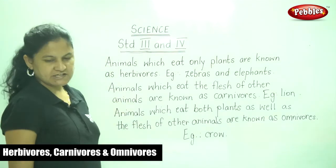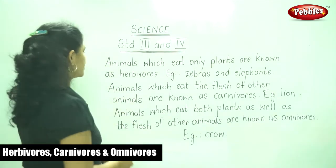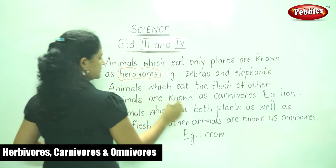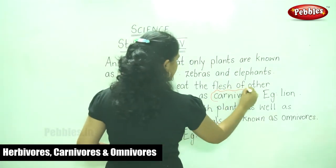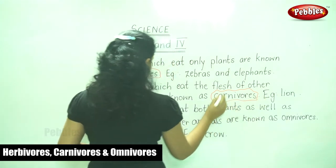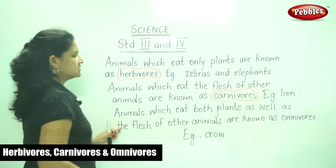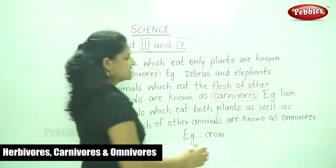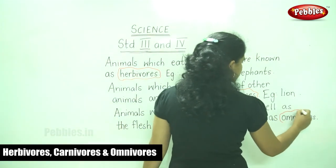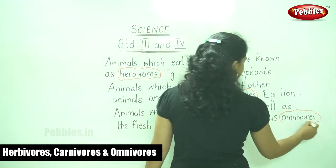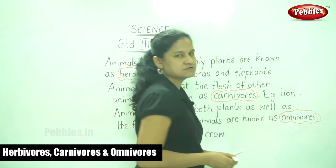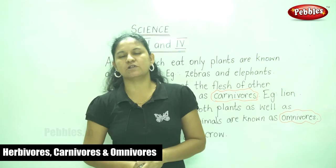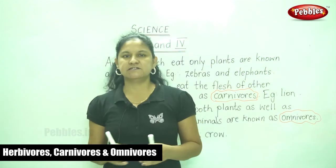Animals which eat the flesh of other animals are known as carnivores, example lion. And animals which eat both plants as well as the flesh of other animals are known as omnivores, example crows. So this is the characterization of animals based on their eating habits.